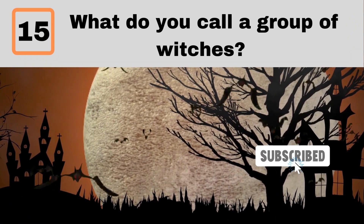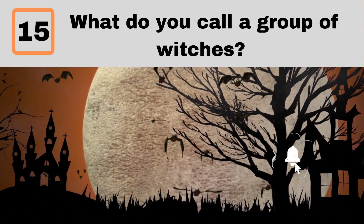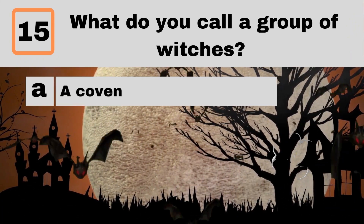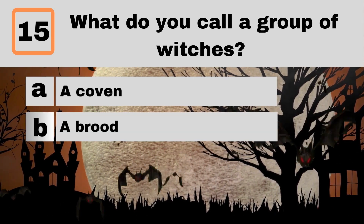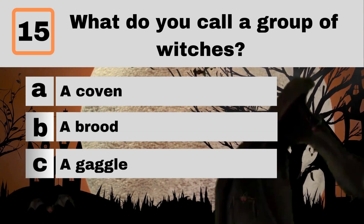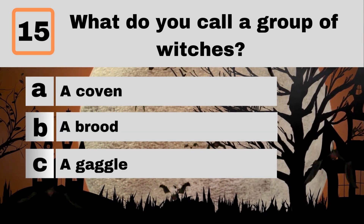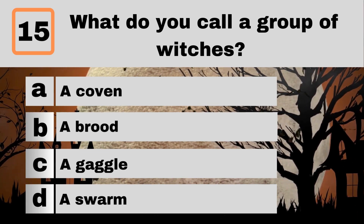Question 15. What do you call a group of witches? A. A coven. B. A brood. C. A gaggle. D. A swarm.